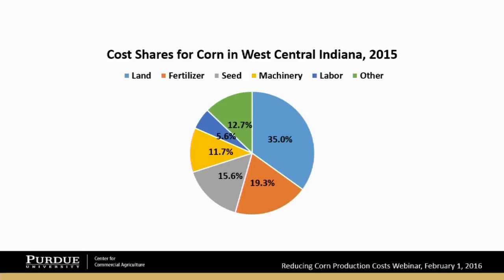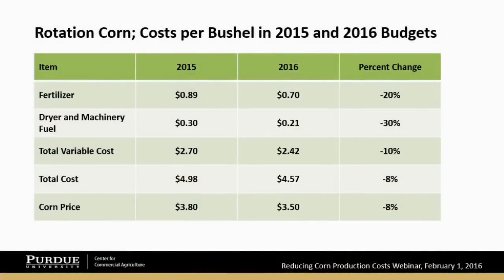When we talk about reducing production cost, we want to focus on reducing cost per bushel of corn grown, not necessarily cost per acre. The important variable is reducing cost per bushel. Michael, you might want to walk through some of the cost changes we've observed over the last year.